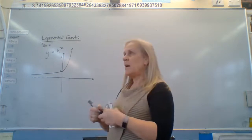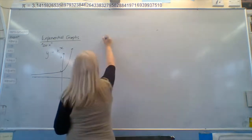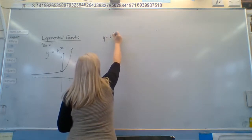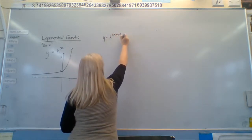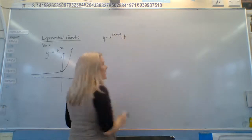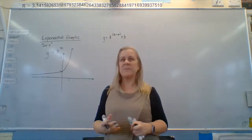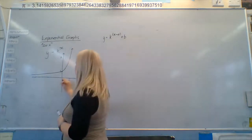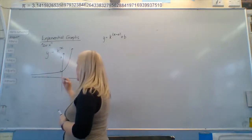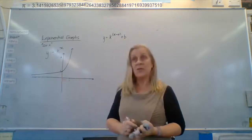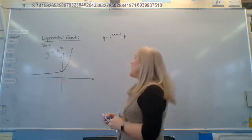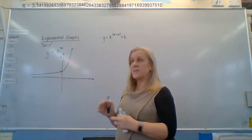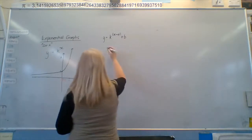So if we've got a general case, y equals k to the power of x minus a plus b. Those are our normal a's and b's. But what are they moving? So they move this point here. They move the origin in this case, because we need to know where that asymptote is because it tells us how our graph is drawn.